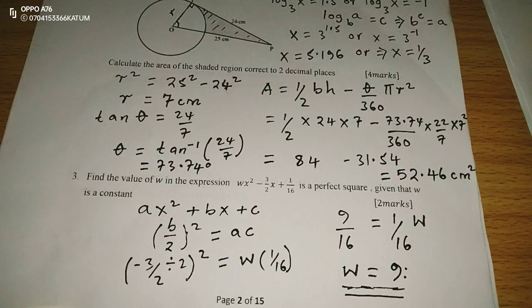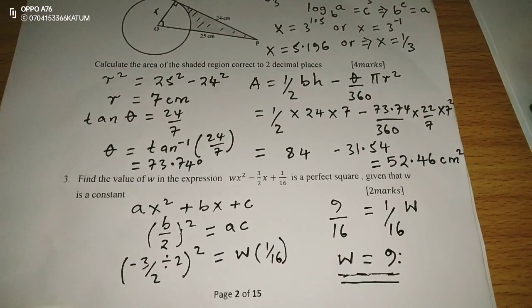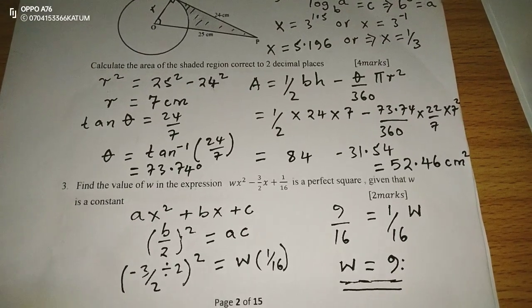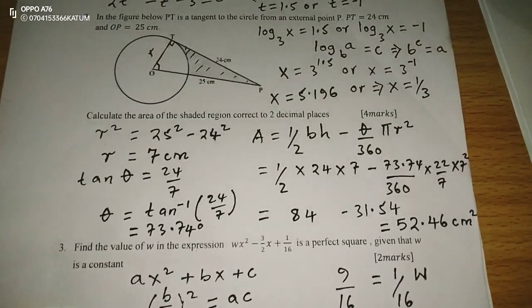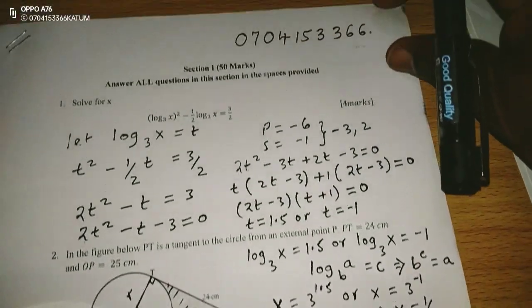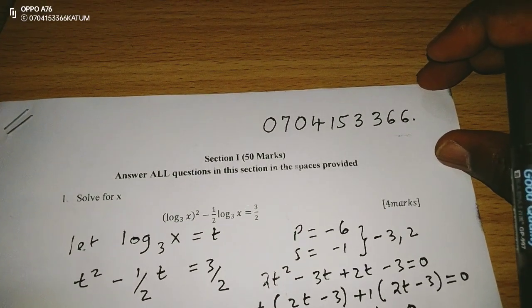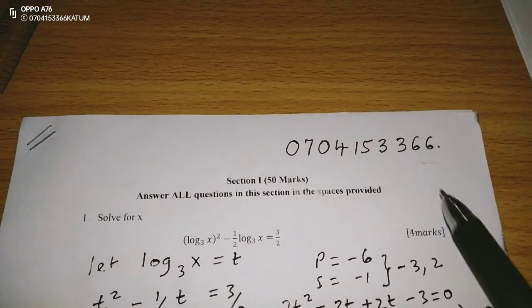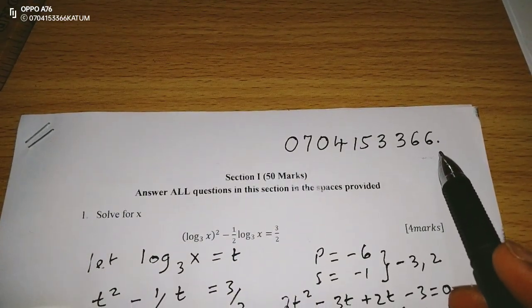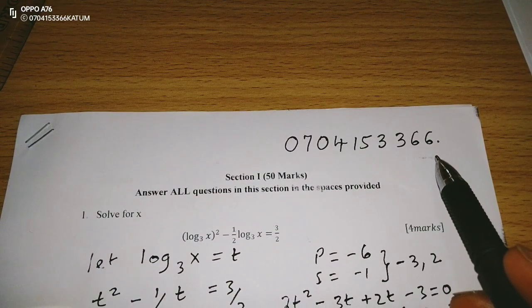That is how we get the value of a certain constant in a perfect square. Thank you for following this lesson. Remember to subscribe and to share this link with friends for you to get learning resources, more so in mathematics and physics. Contact us using the number shown on the screen. Thank you.